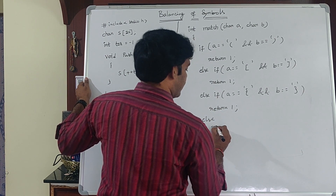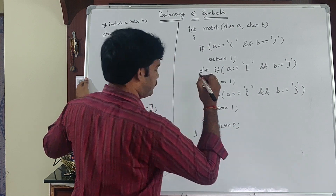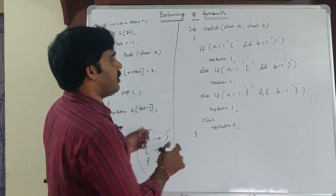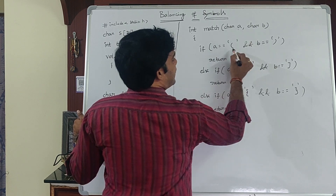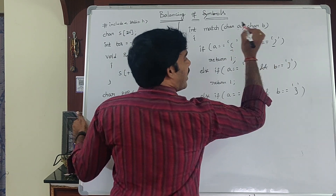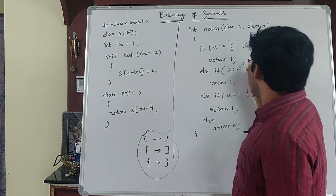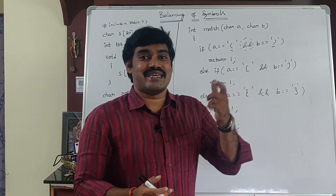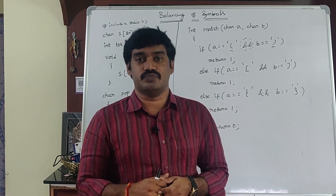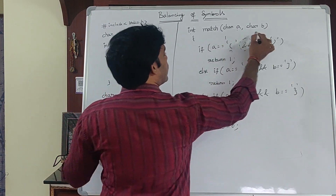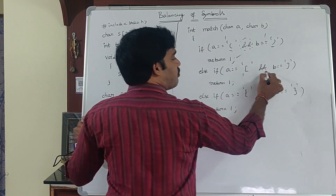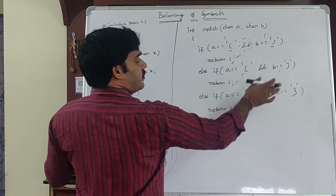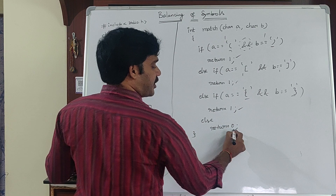Finally, return 0 if none of the conditions are matched. This is the complete logic to check whether symbols are balanced. The function uses the logical AND operator — the second operand is evaluated only when the first operand is true. When both opening and closing symbols match, the function returns 1; otherwise it returns 0.